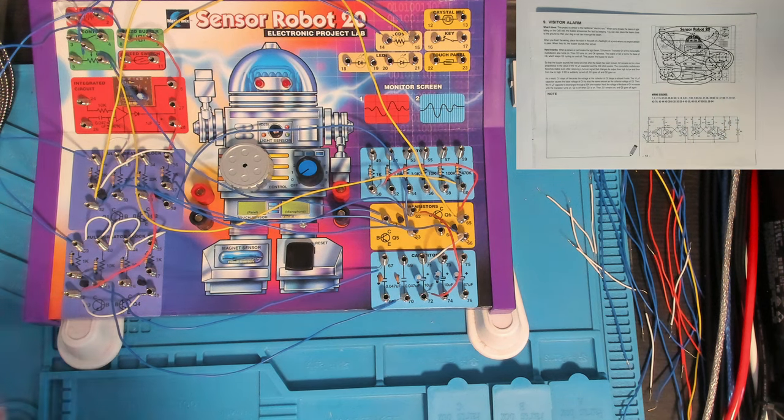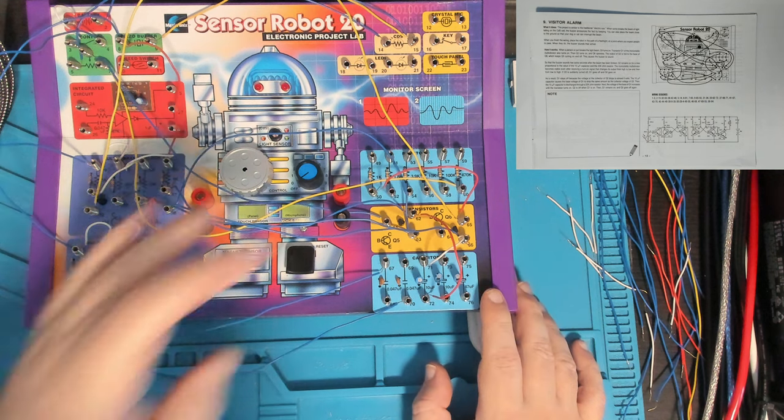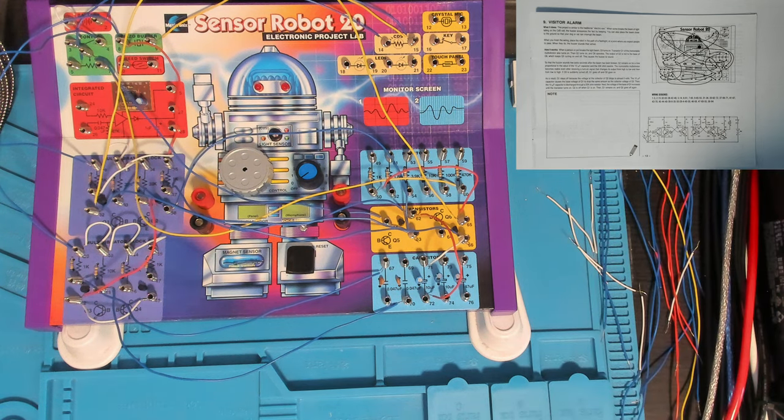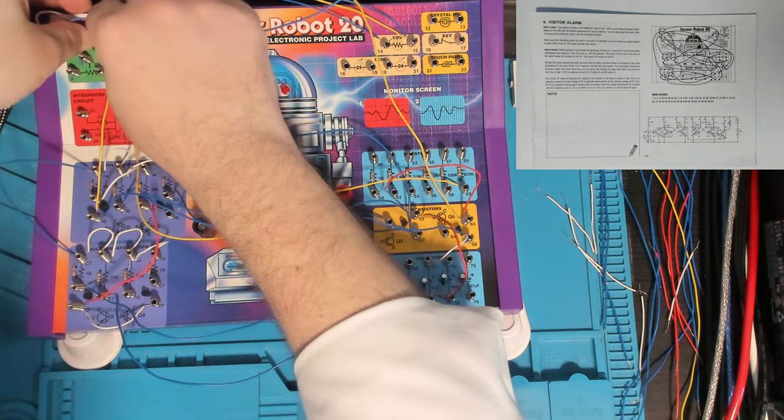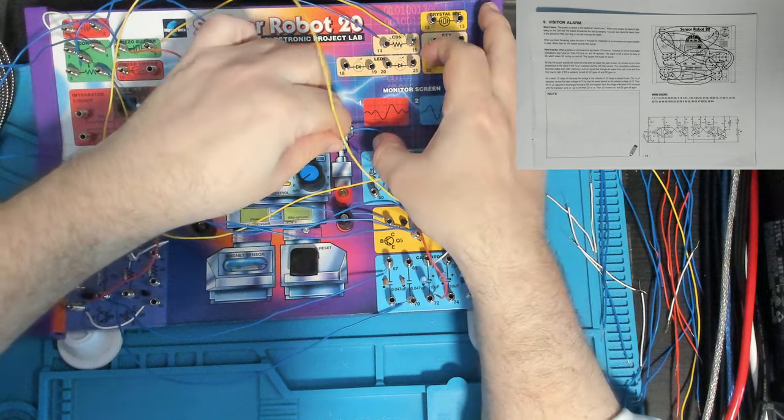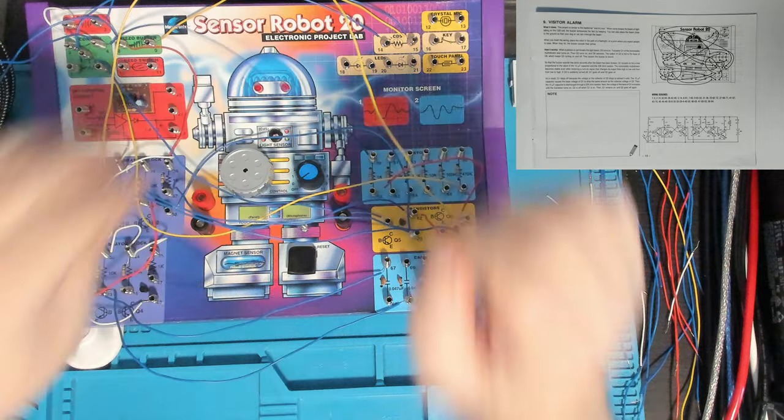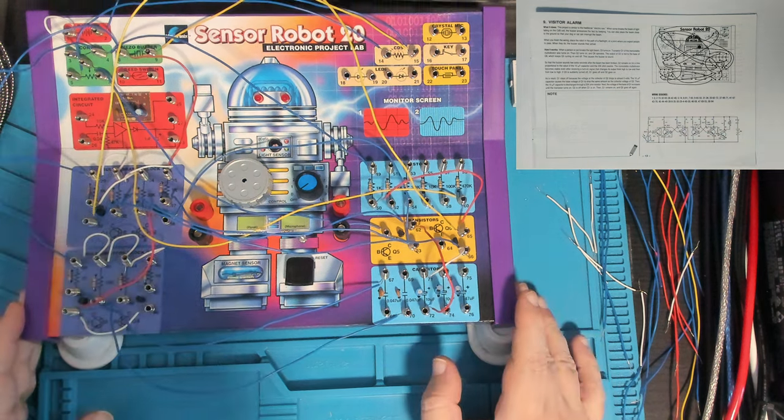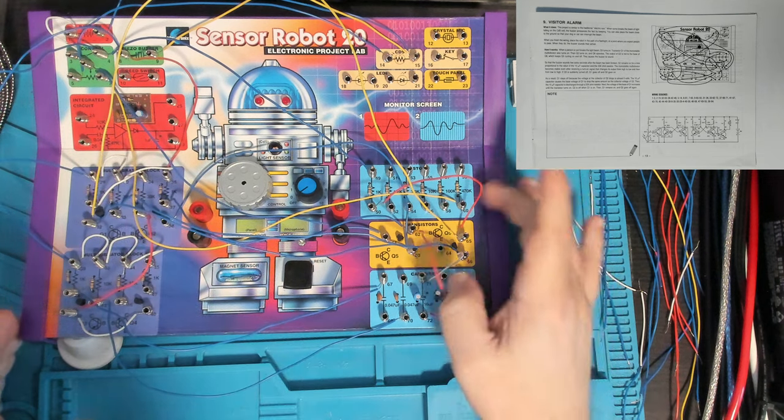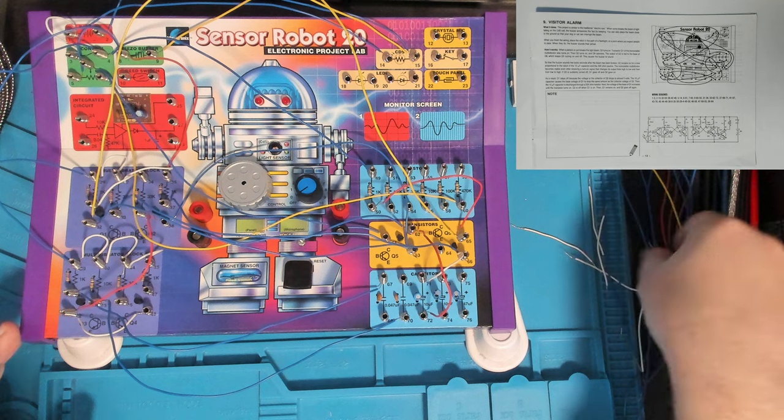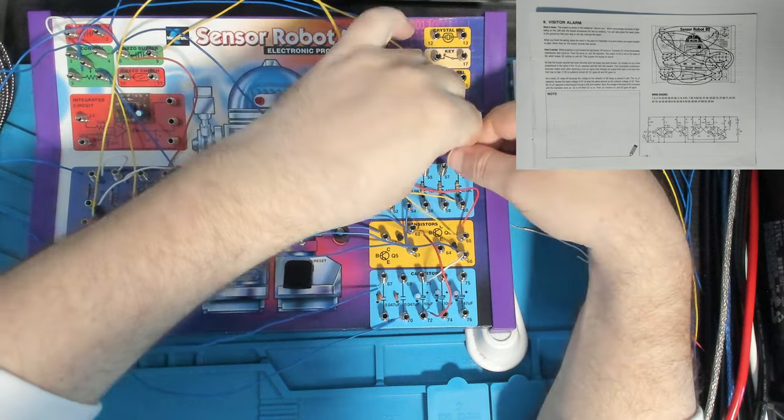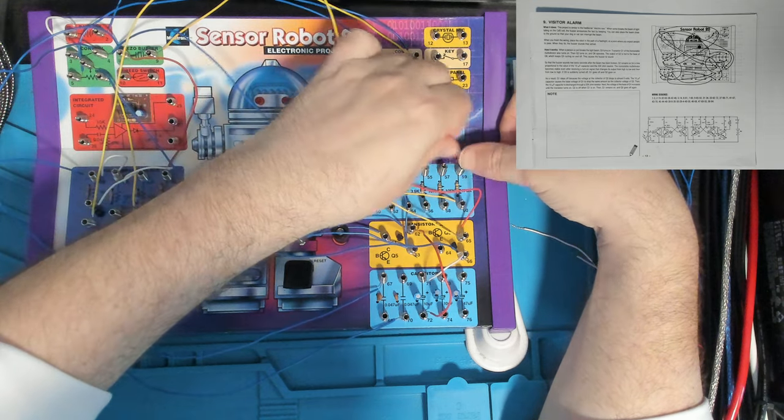Then we've got 4 to 49. 49 is our 1K resistor over here in the resistor block. I'm connecting the power switch over to the 1K resistor. And then 49 to 59, connecting the 1K resistor and the 470K resistor.